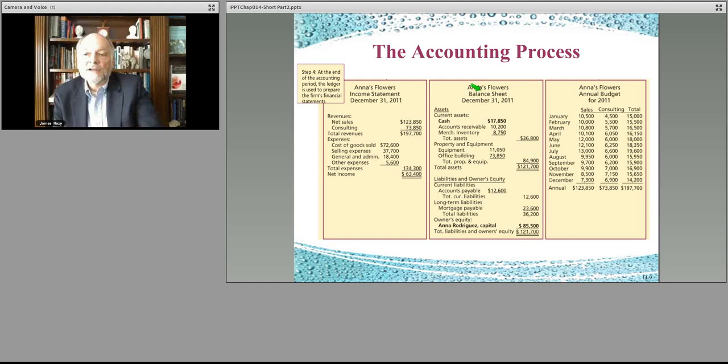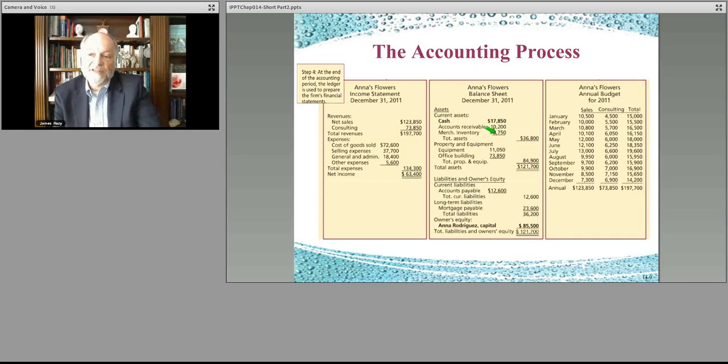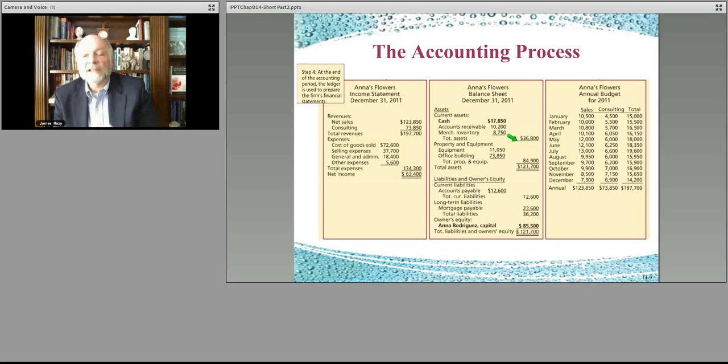Cash, $17,000. You have accounts receivable, means people owe you an additional $10,000. You also have inventory of $8,750, vases and the like in this case. So your total assets that you own that are short-term, current, that is they turn over relatively quickly, you have in stock at that particular point in time $36,800 worth of these current assets, meaning over the course of the year, you'll use them. The next year, you'll use them.